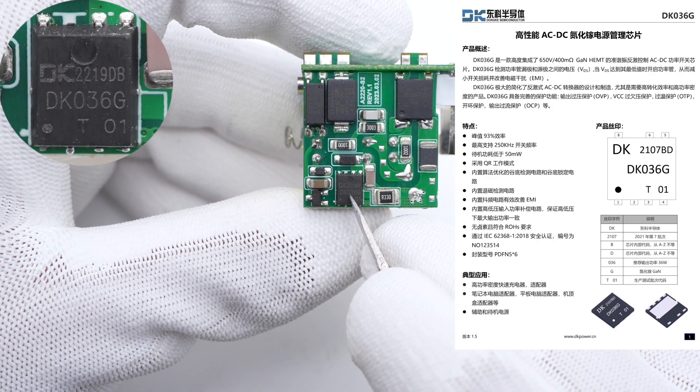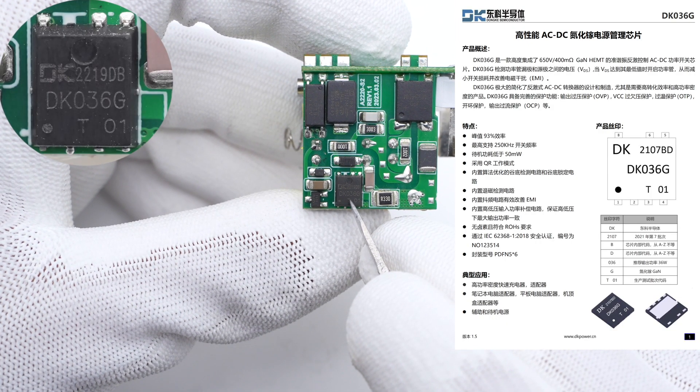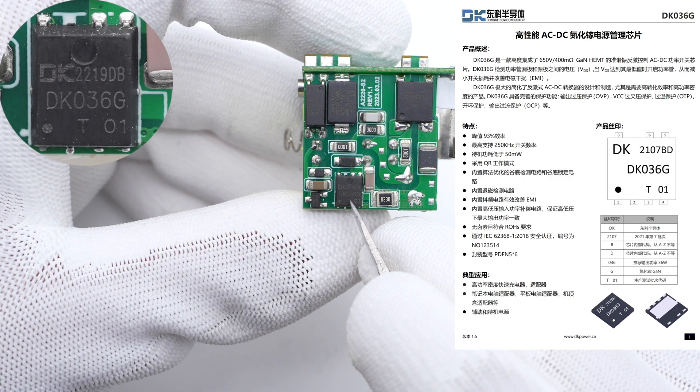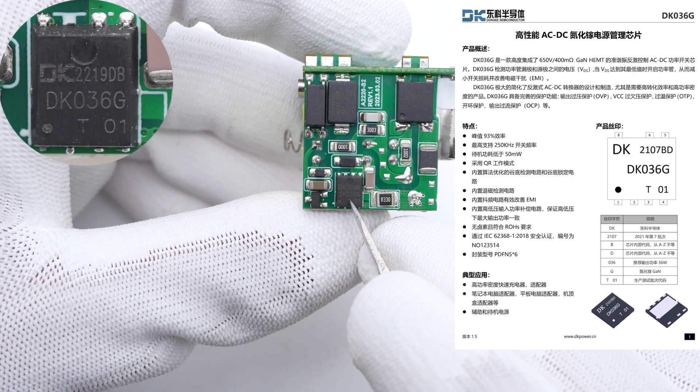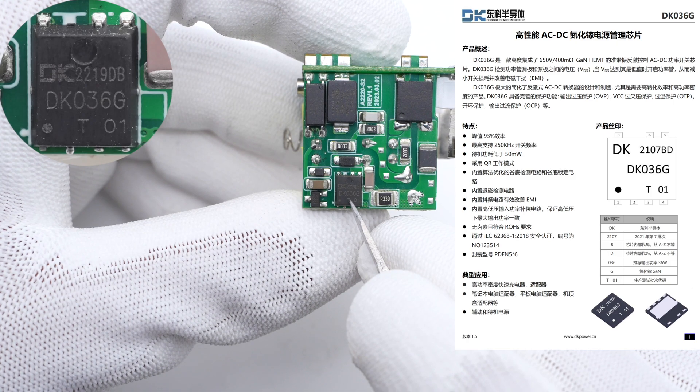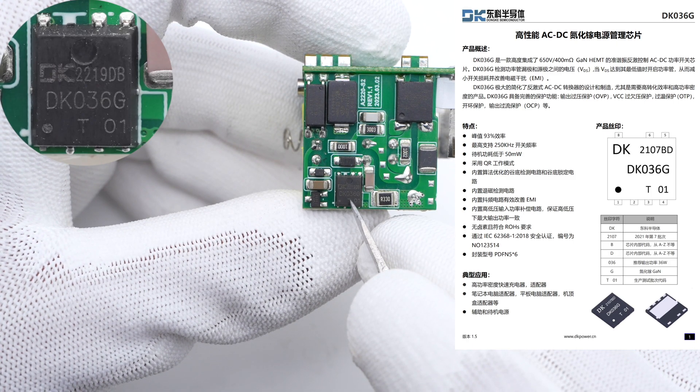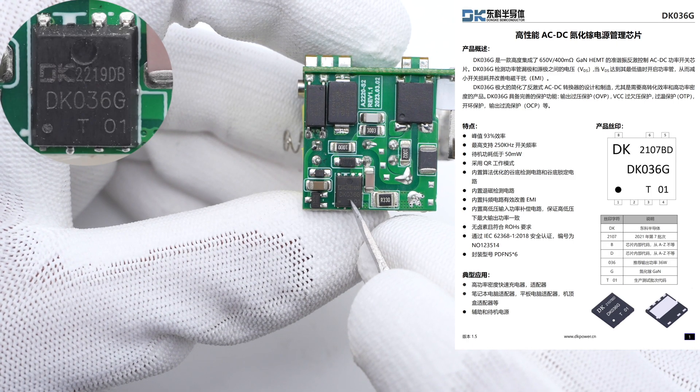The main control chip is from Dongke, which adopts PDFN 5x6 package. It integrates a 650V, 400mΩ GaN transistor. It can also detect the voltage between the drain and source of the MOSFET, aka VDS.